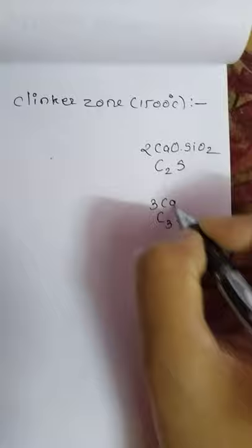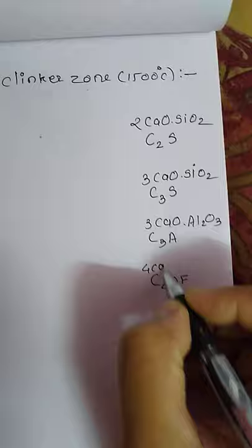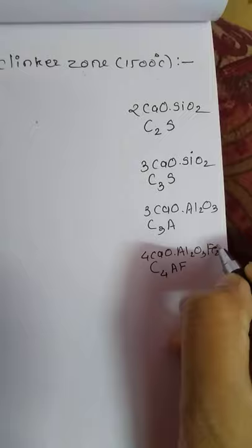C3S is 3CaO·SiO2. C3A is 3CaO·Al2O3. C4AF is 4CaO·Al2O3·Fe2O3. In this way, various clinker formations take place.